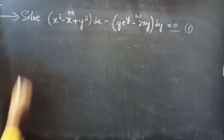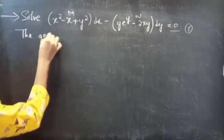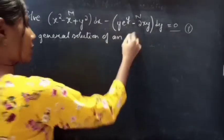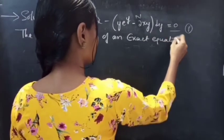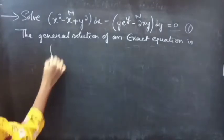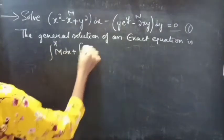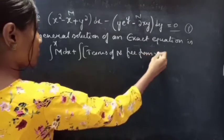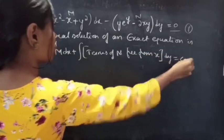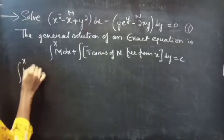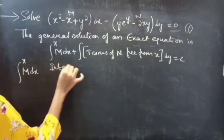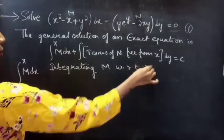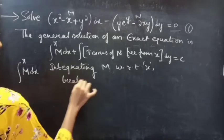Since the given equation is an exact equation, we know that the general solution is given by: integral over x of M dx plus integral of terms of N free from x dy equals constant. Consider the first integral — we will be integrating M with respect to x treating y as constant.